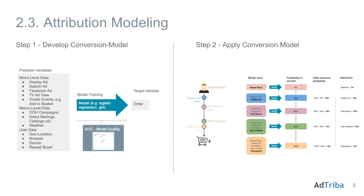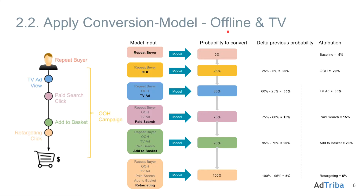To summarize: we first develop a conversion model, which happens every night for every one of our clients, integrating all information important for causal attribution modeling. We then apply this trained model to every step of the customer journeys that are supposed to be reattributed. We can also include information about offline campaigns and TV ads — for example, if we know that during a particular customer journey there was an out-of-home campaign, we can include that information and have our model calculate a conversion probability on that basis.